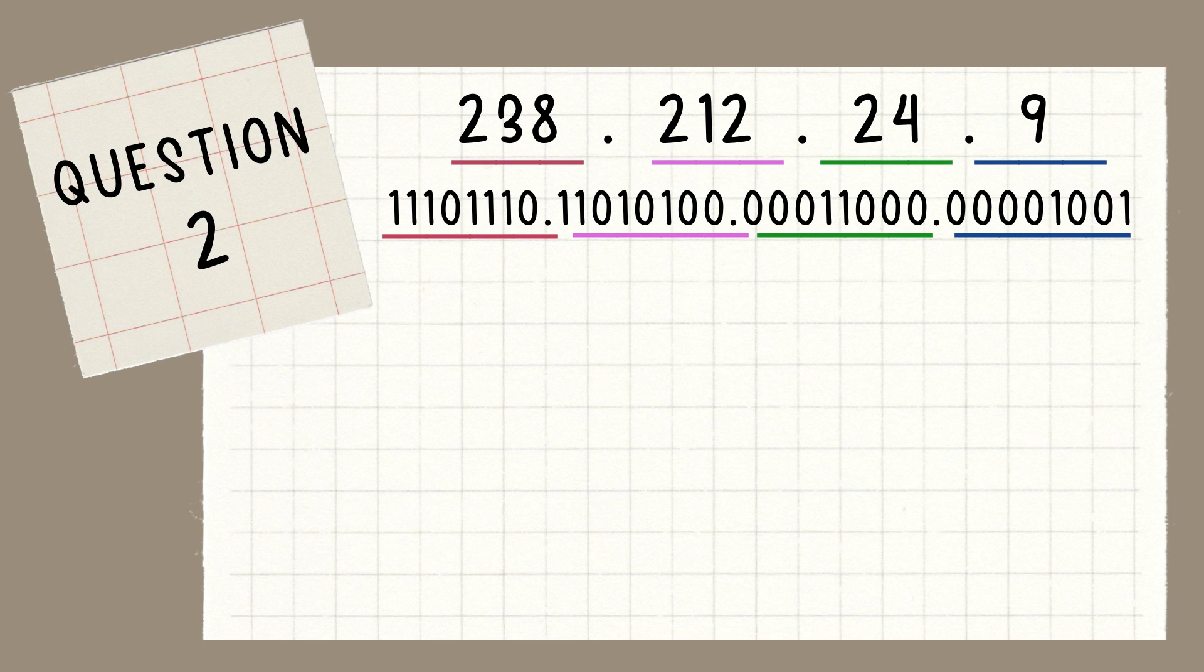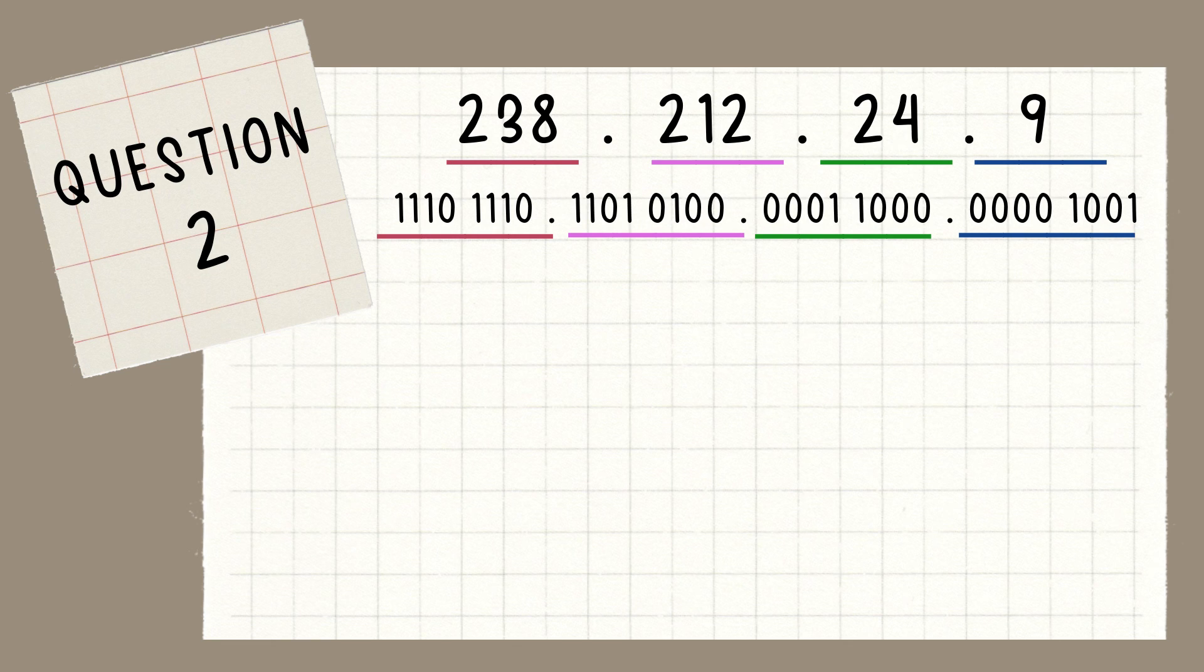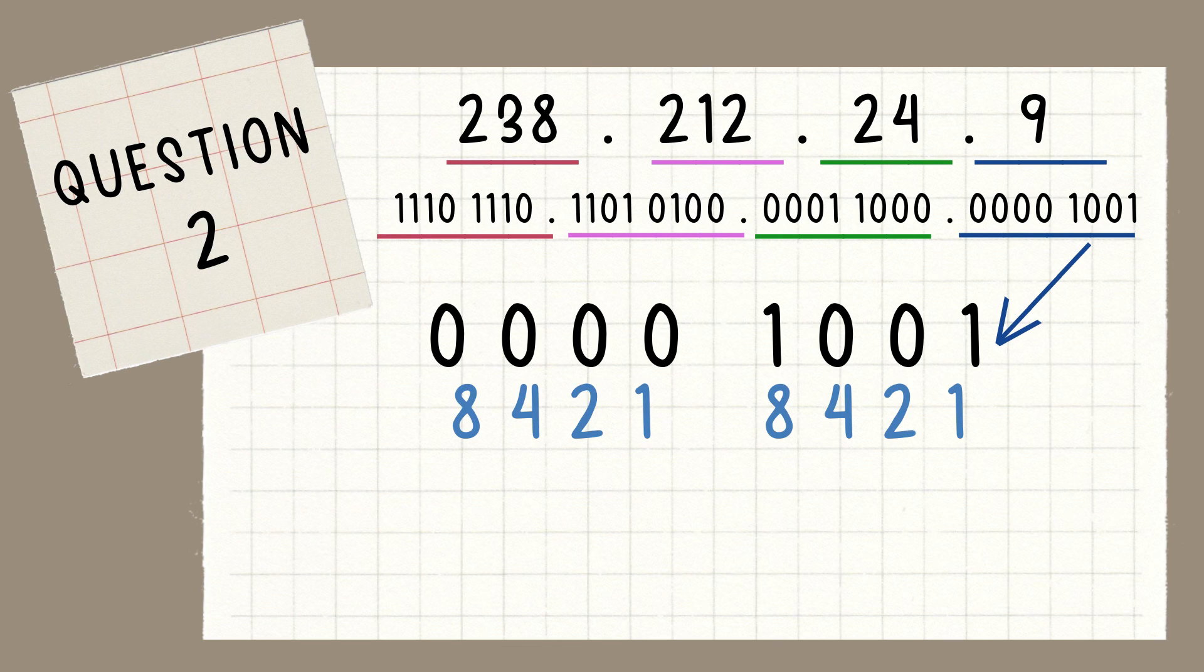So, next one, we will turn the binary number to hexadecimal number. So, the first one, we will try to convert number 238, which we had turned it into a binary. So, we divided the number into 2 sections. We got the binary number as 0, 0, 0, 0 and 1, 0, 0, 1. So, we put number 8, 4, 2, 1 underneath the binary number. On the first binary number, which is 0, 0, 0, 0, it actually turned to 0. Next one, we get number 8 and 1. We will get 9.